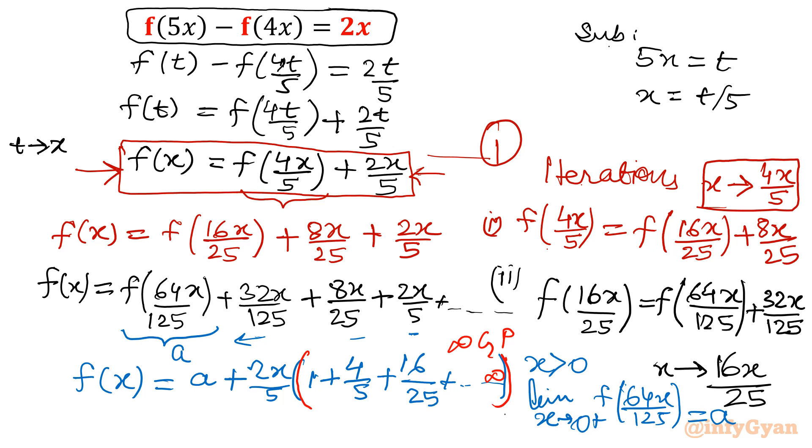So what is the formula? First term, that means 1, over 1 minus common ratio. Common ratio is 4 over 5. So that value is 1 minus 4 over 5, so 1 over 5. 5 will come to the numerator. So that will cancel your denominator. So ultimately our f of x will be a plus 2x.